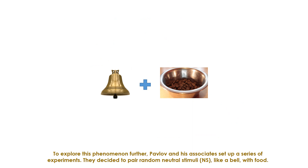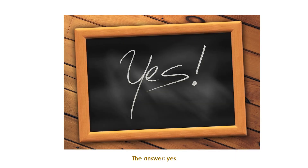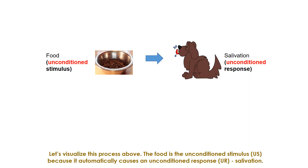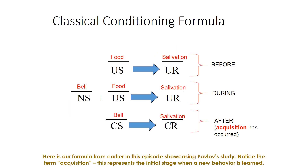To explore this phenomenon further, Pavlov and his associates set up experiments. They decided to pair a random neutral stimulus, like a bell, with food. Pavlov wanted to know: if he repeatedly paired the sound of a bell with food — bell, food, bell, food — would the dog salivate at the sound of the bell alone in anticipation? The answer was yes. The food is the unconditioned stimulus because it automatically causes salivation, the unconditioned response. Salivation at the sound of a bell is learned, so the sound becomes the conditioned stimulus and salivation becomes the conditioned response. This initial stage when a new behavior is learned is called acquisition.